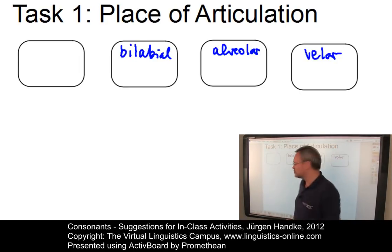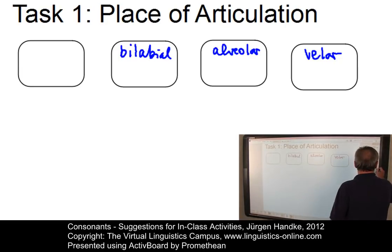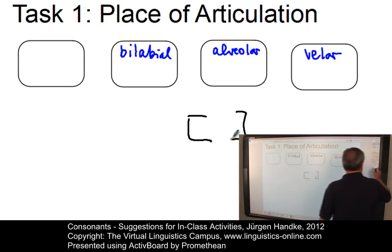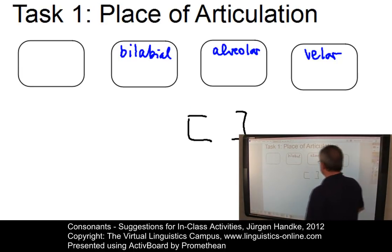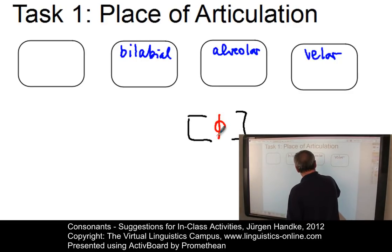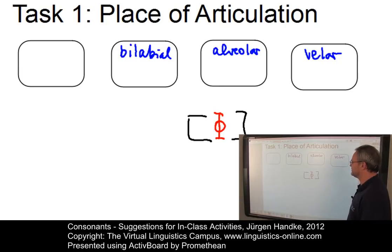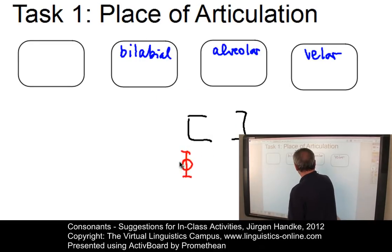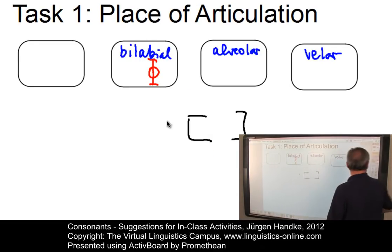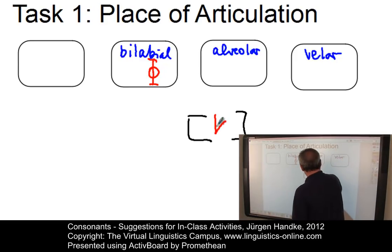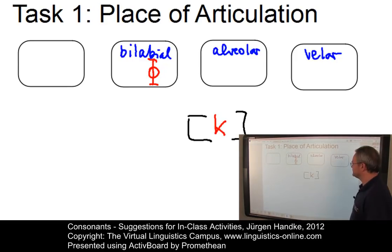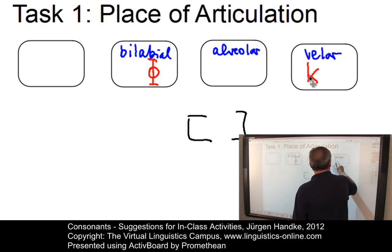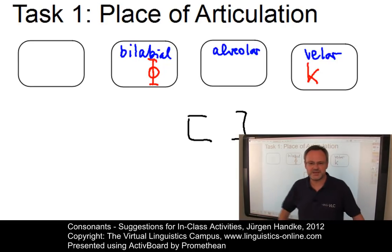As class instructor, you define some consonants and ask the students what place of articulation is involved. They would identify a consonant as bilabial, for example, and you can then put it into the container. Then draw the next consonant, and by means of interaction with you, the students would define it as a velar consonant, and so on and so forth.